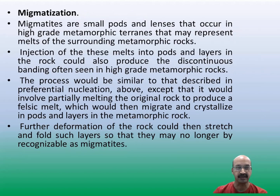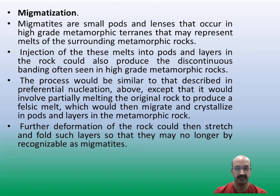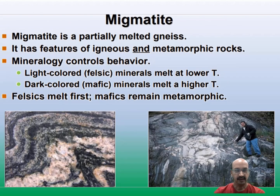Migmatites are a classical example of metamorphic differentiation. Migmatites are formed from the partial melting of the original rock. Due to this partial melting, we get felsic melt which migrates and crystallizes in the form of parts and layers in the metamorphic rocks. Many times these migmatites exhibit various folds like ptygmatic folds. Here we can observe the metamorphic differentiation as different layers of dark colored and light colored minerals in these two photographs.